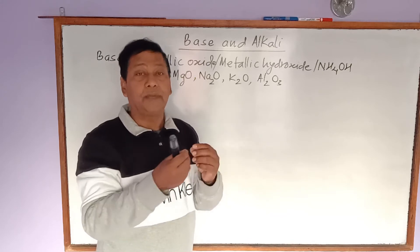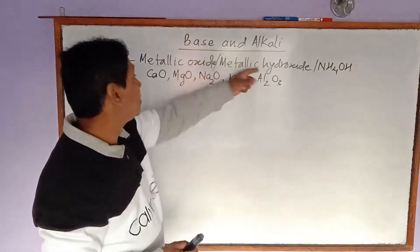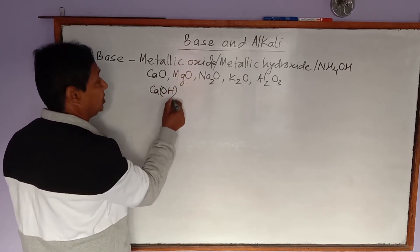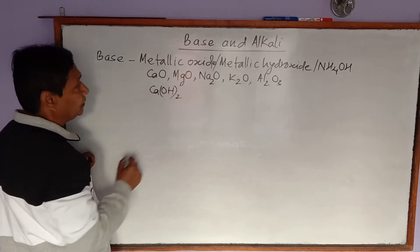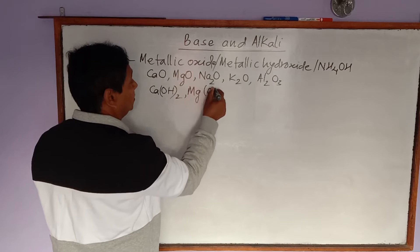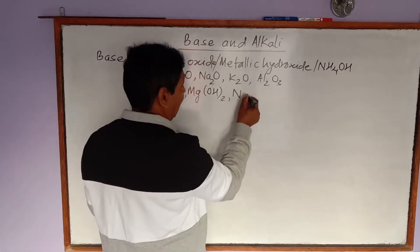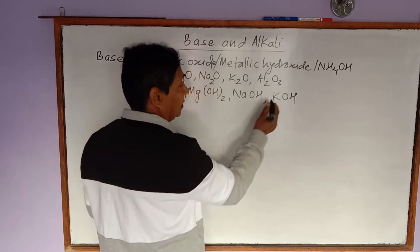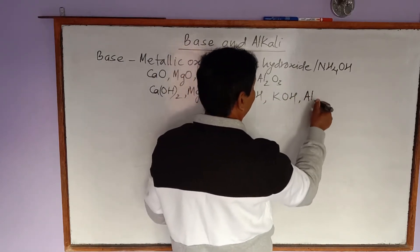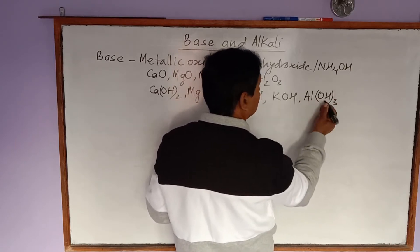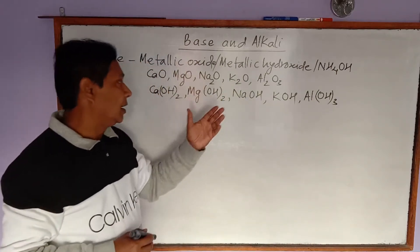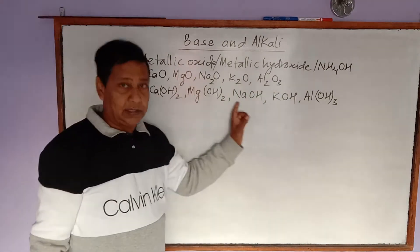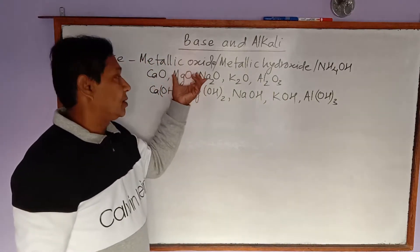Metallic hydroxides are also bases. For example, calcium hydroxide Ca(OH)₂ — since calcium has valency 2 and hydroxide has valency 1. Similarly, magnesium hydroxide Mg(OH)₂, sodium hydroxide NaOH, potassium hydroxide KOH, and aluminum hydroxide Al(OH)₃ — since aluminum has valency 3 — are all metallic hydroxides and are all bases.